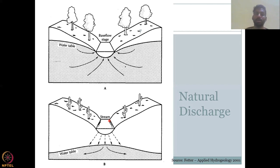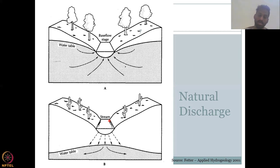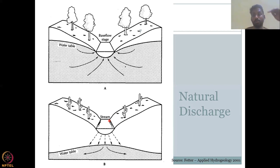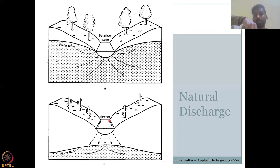So here we have seen both natural recharge and natural discharge, where natural recharge happens due to the difference in potential of where the water level is, and also because of movement of water from rainfall into the ground through gravity.